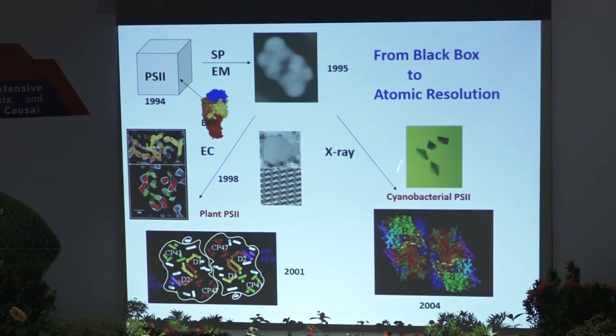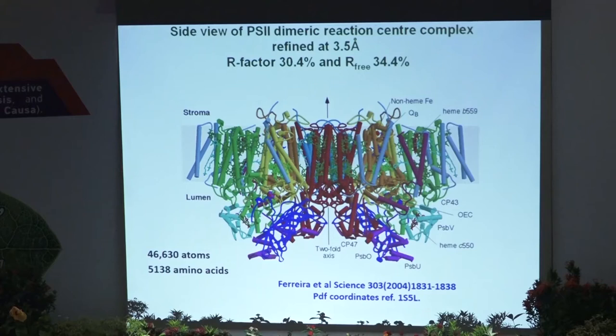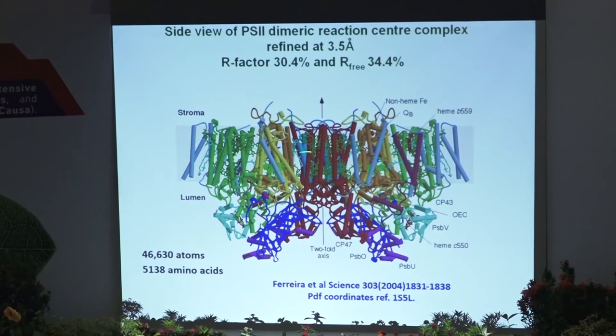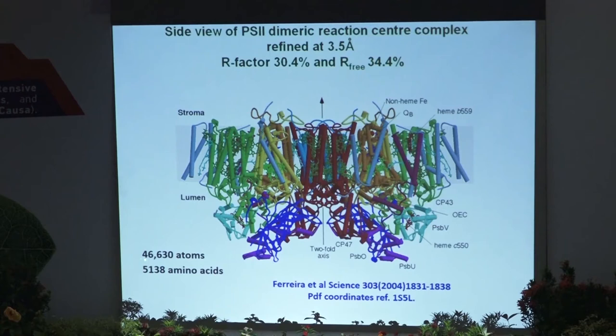The resolution wasn't high enough to see the manganese cluster, so we turned to X-ray crystallography and grew crystals using a cyanobacterial system. We obtained a full structure, published in 2004, of photosystem II. The side view of the dimer shows all the different helices — those tubes are alpha helices going across the membrane. At 3.5 angstroms, we identified over 5,000 amino acids and nearly 50,000 atoms. All the proteins were correctly determined, and even with high-resolution structures today, nothing has been controversial. We published it in Science.